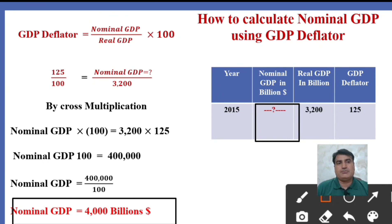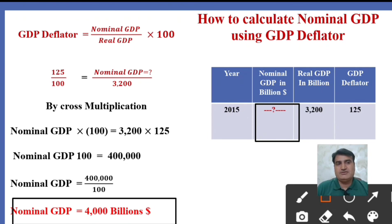I hope this is clear to all of you — how to calculate the nominal GDP, real GDP, and how to calculate the GDP Deflator. In the previous lectures, we also calculated the inflation rate and discussed in detail GDP, GNP, NNP, personal income, disposable income, nominal GDP, real GDP, and what nominal GDP and real GDP explain. I hope there is no confusion. If you have any question or query, you may ask in the comment box. Thanks for watching.